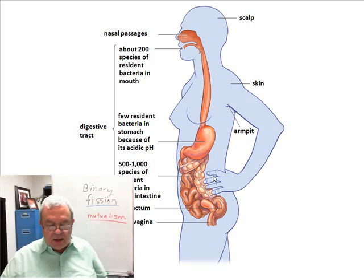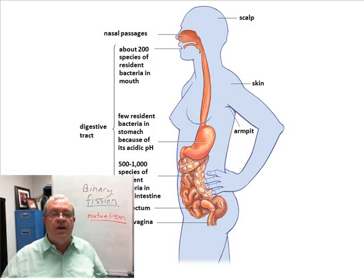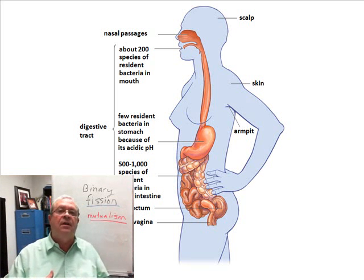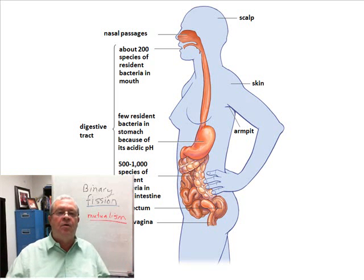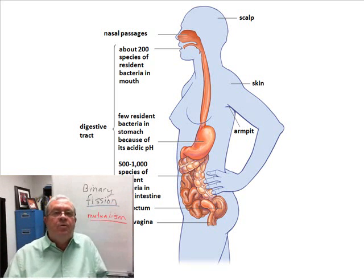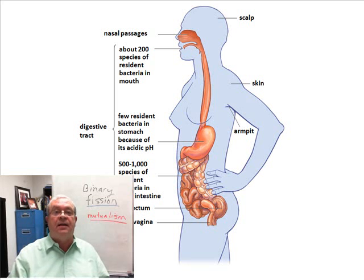Approximately how many bacteria cells live in our digestive tracts? About one hundred trillion bacteria cells live in or on the human body. All the bacteria within us weigh approximately three pounds — so you can say three pounds of that is not me, it's the bacteria living inside me. And approximately what fraction of our colon contents is bacteria? About half of it.